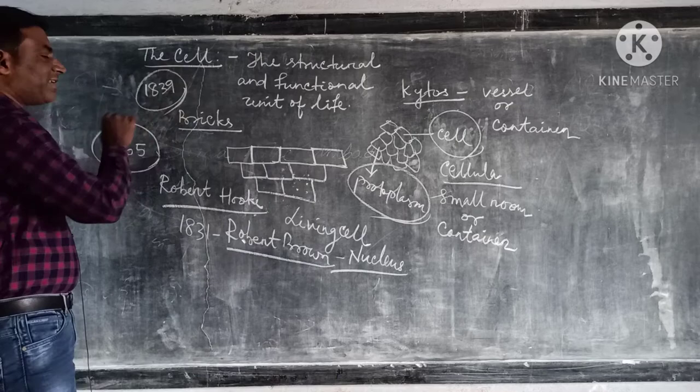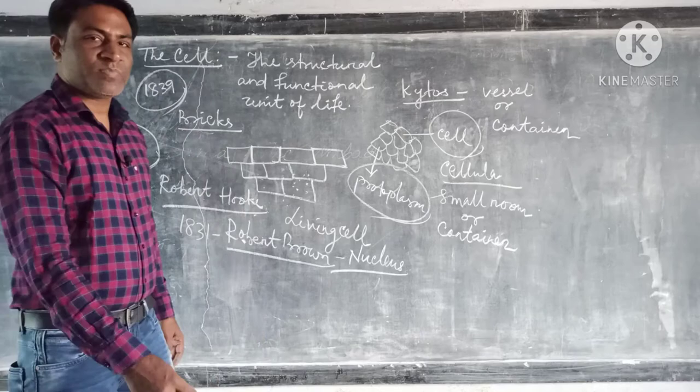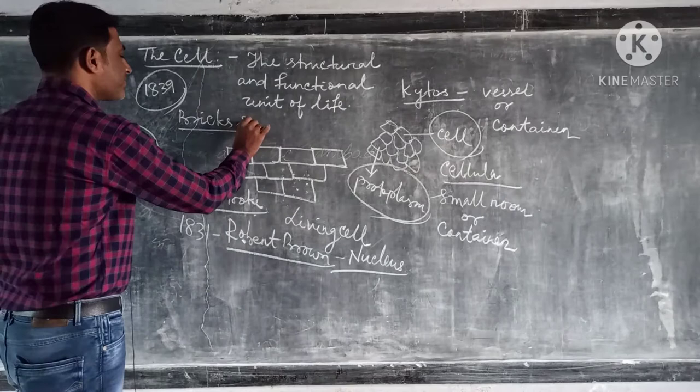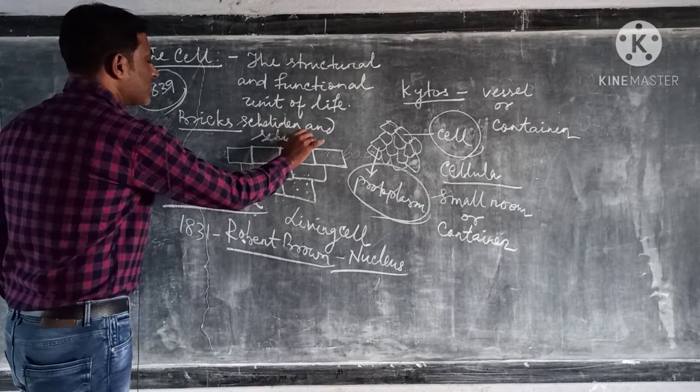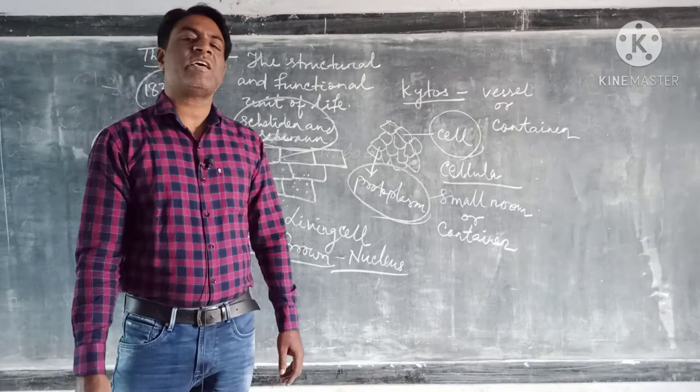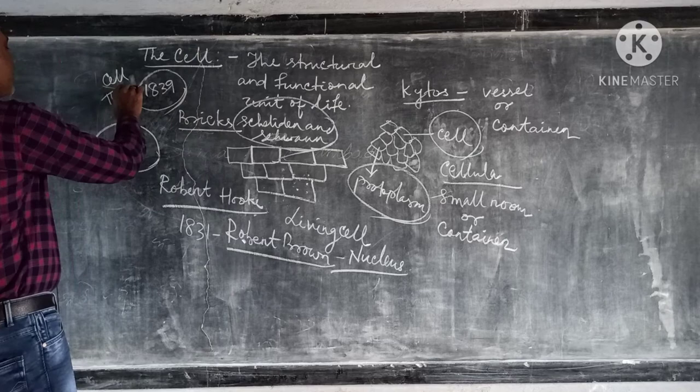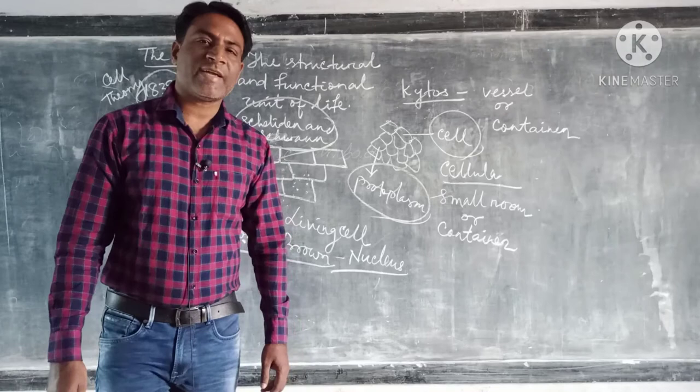Then after 1839, in the year 1839, two scientists named Schleiden and Schwann. The two scientists Schleiden and Schwann discovered cell theory or cell biology. Cell theory.